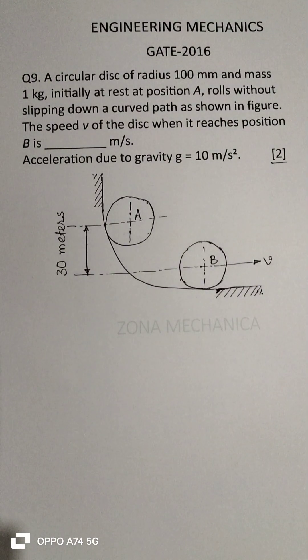A circular disk of radius 100 mm and mass 1 kg, initially at rest at position A, rolls without slipping down a curved path as shown in the figure. The speed v of the disk when it reaches position B is how much in meters per second? Acceleration due to gravity g equals 10 m/s².